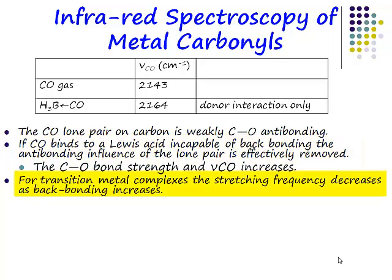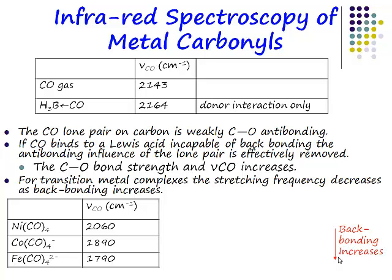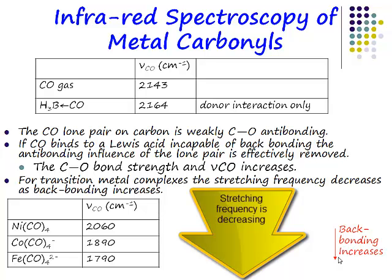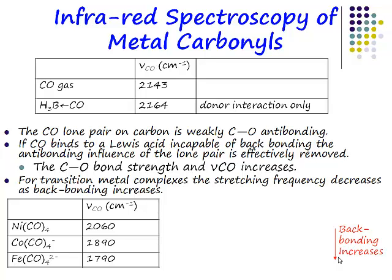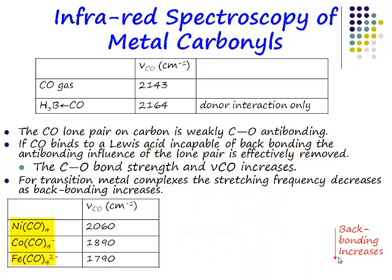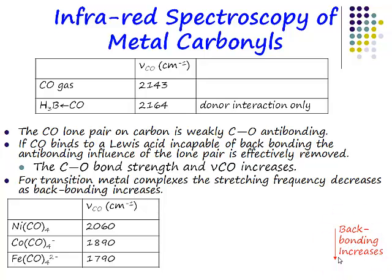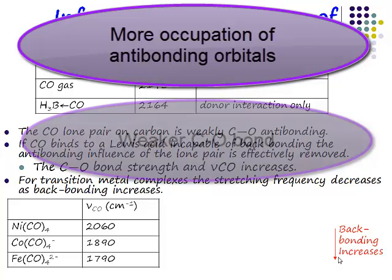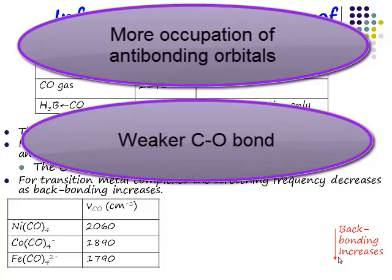In the case of a transition metal, you are getting backbonding. Looking at a table: nickel tetracarbonyl is neutral, cobalt tetracarbonyl is a mono-anion, and iron tetracarbonyl is a di-anion. The stretching frequency is decreasing because the electron density on the metal is increasing. As electron density increases, there's more scope for backbonding, which means more occupation of the π* antibonding orbitals, which gives a weaker carbon-oxygen stretch and the stretching frequency goes down.